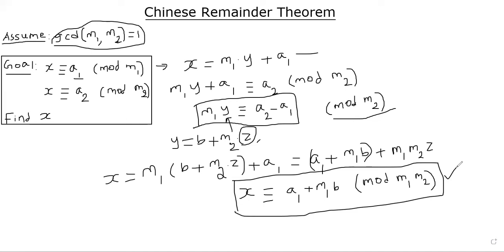So important thing to note is that the solution, we get a bunch of solutions I mentioned. One solution is A1 plus M1 b. Other solution is any multiple of M1 M2 added to A1 plus M1 b will also satisfy these equations, these two congruences. We can actually check it.